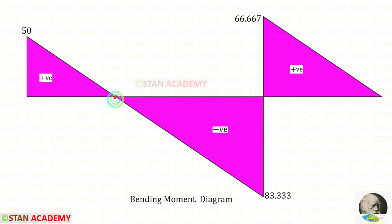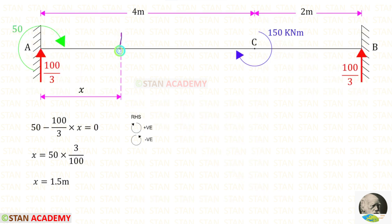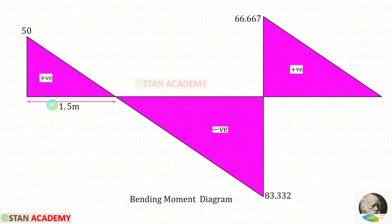This is the point of contraflexure. Making a section at this point at a distance x from point A, we can find the bending moment expression and set it equal to zero. Using that condition, we can solve for x. Now we are going to end this session. Thank you for watching this video.